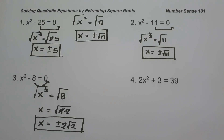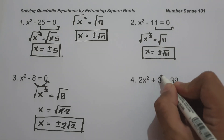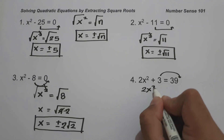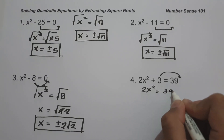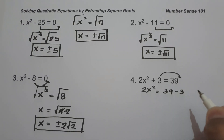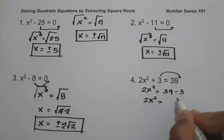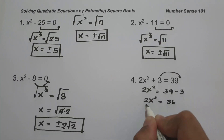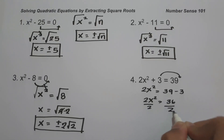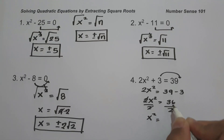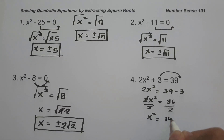On number four, we have 2x² + 3 = 39. To find the value of x, let us move 3 to the other side, giving us 2x² = 39 - 3, which is 36. Then let us divide both sides by 2, giving us x² = 36 ÷ 2, which is 18.